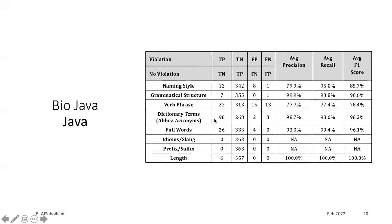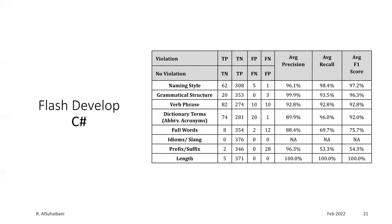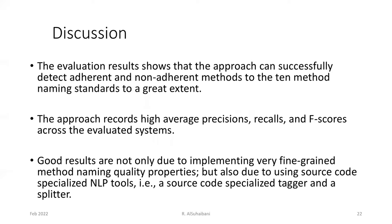We had especially good results in detecting true positives for dictionary terms, abbreviation, and acronym standards. The same applies to Flash Develop software written in C#. Our evaluation shows that the approach can successfully detect adherent and non-adherent methods to the 10 naming standards to a great extent, with high average precisions, recalls, and F-scores.